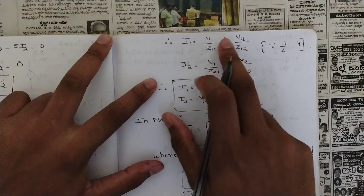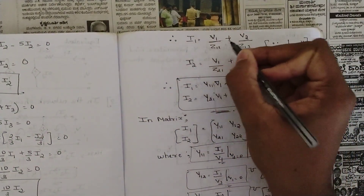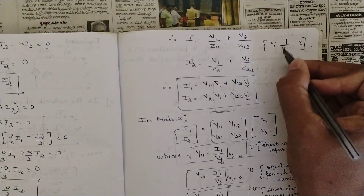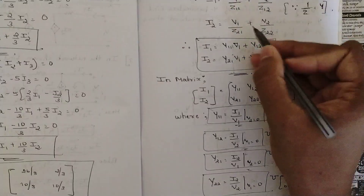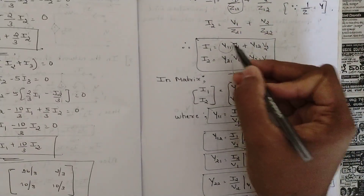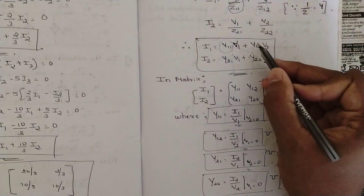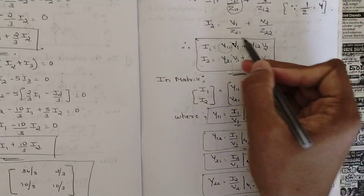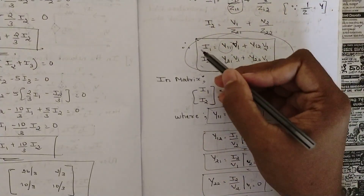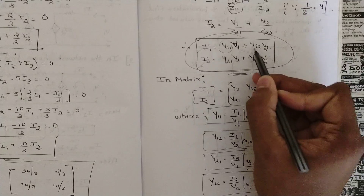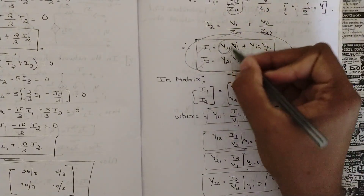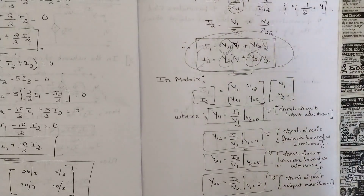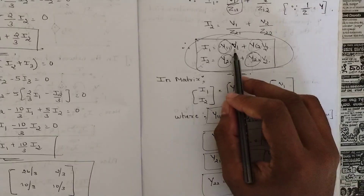The equations are: I1 = V1/Z11 + V2/Z12, and since 1/Z = Y, we get I1 = Y11·V1 + Y12·V2, and similarly I2 = Y21·V1 + Y22·V2. Our goal is to find the individual parameters Y11, Y12, Y21, and Y22 by applying the condition that either V1 = 0 or V2 = 0.